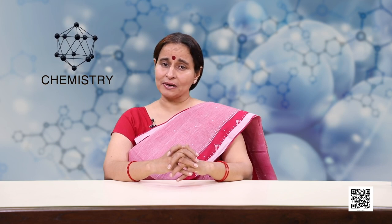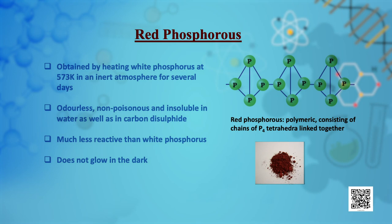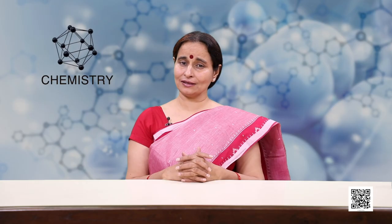Red phosphorus is obtained by heating white phosphorus at 573 Kelvin in an inert atmosphere for several days. It is odorless, non-poisonous, and insoluble in water as well as in carbon disulfide. Chemically, red phosphorus is much less reactive than white phosphorus and it does not glow in the dark.